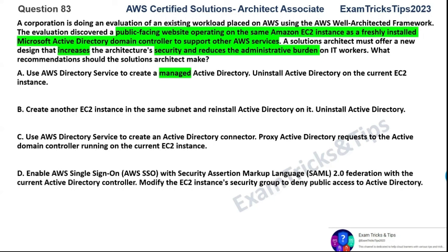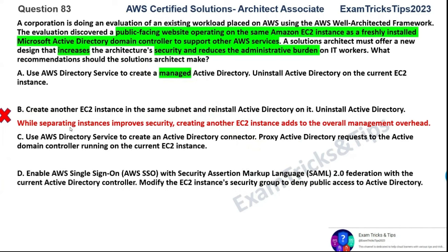Option B: create another EC2 instance in the same subnet and reinstall Active Directory on it, then uninstall Active Directory from the existing server. This tries to separate the instances, which is the objective — you should never have your public-facing resources and anything that could act as a gateway to your company's internal resources on the same physical server or even the same logical network. However, adding another EC2 instance means additional management and operational overhead. So this may improve security slightly but it's not the ideal correct option.